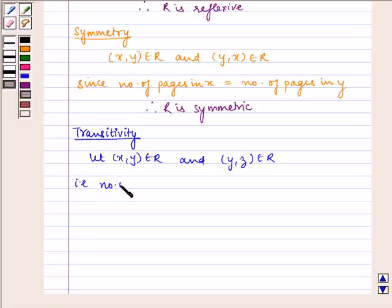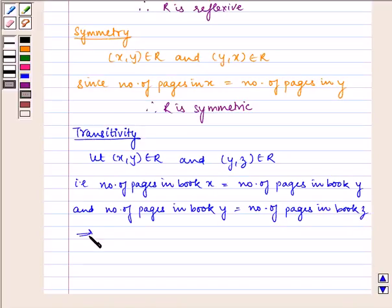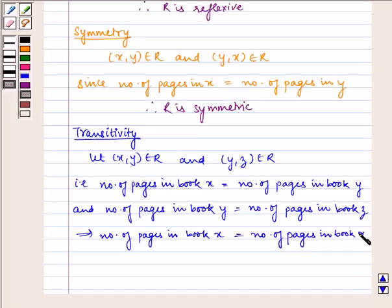That is, number of pages in x equals number of pages in book y, and number of pages in book y equals number of pages in book z. This implies number of pages in book x equals number of pages in book z.